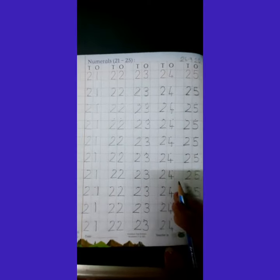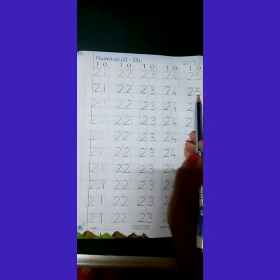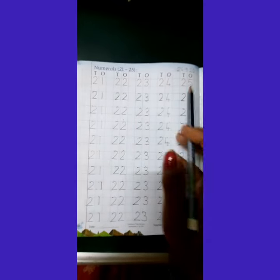Now children, I have finished writing numbers 21, 22, 23, 24, 25. So now children, you watch this video and learn to write number 21 to 25 in your maths workbook, page number 28. Thank you.